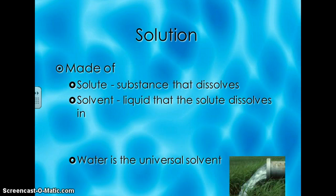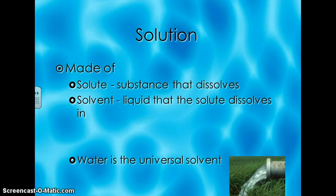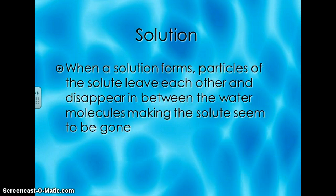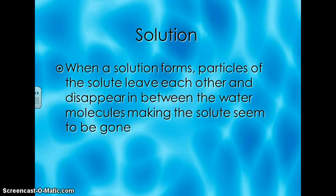Solutions are made of two separate things: a solute and a solvent. A solute is the substance that dissolves in the liquid, and the solvent is the liquid that the solute dissolves in. Make sure you write down and put a star by this: water is the universal solvent. When a solution forms, particles of the solute leave each other and disappear between the water molecules, making the solute seem to be gone. If you put sugar in water and can't see it anymore, it's still there — it's just hiding between the water molecules.